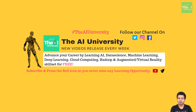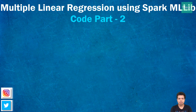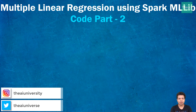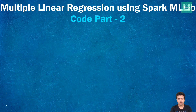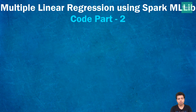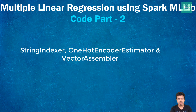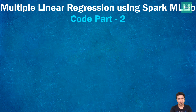This is the continuation of previous Part 1 coding video of Spark MLlib based machine learning model called Multiple Linear Regression. In this Part 2 coding video, I am going to cover the code to perform some feature engineering steps since our data contains both categorical and numerical variables.